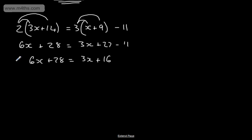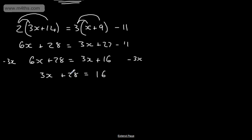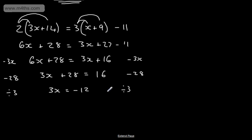I've got 6x here and positive 3x on the right-hand side, so I'm going to subtract 3x from both sides. That gives me 3x plus 28 is equal to 16. Now I subtract 28 from both sides, which gives me 3x is equal to negative 12. Dividing both sides by 3, x is equal to negative 12 over 3, which is negative 4.